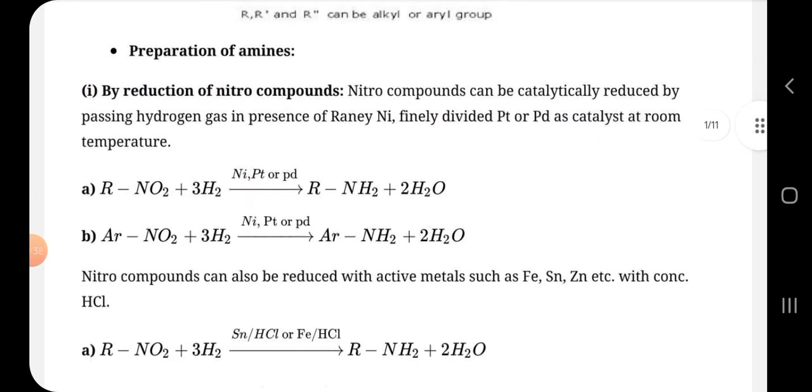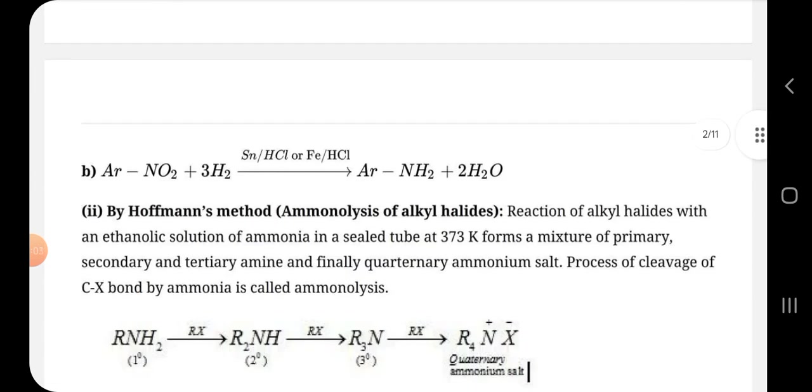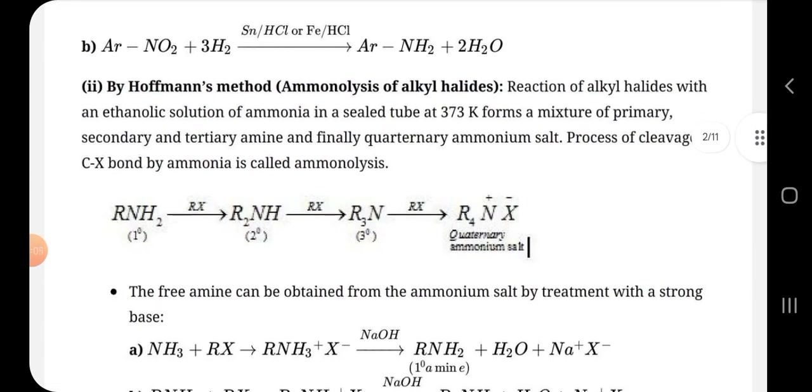We can prepare amine by many types. First is by reduction of nitro compounds, like RNO2 plus 3H2 in the presence of nickel divided by platinum or palladium gives RNH2 plus H2O. Here, R can be alkyl or aryl group. Then second, by Hoffman method, that is ammonolysis of alkyl halides.